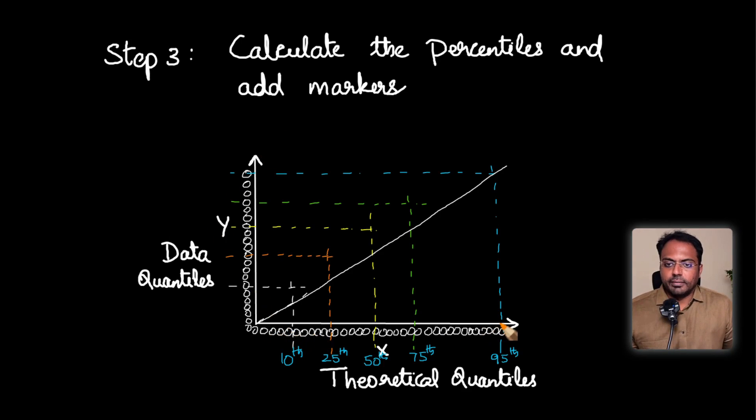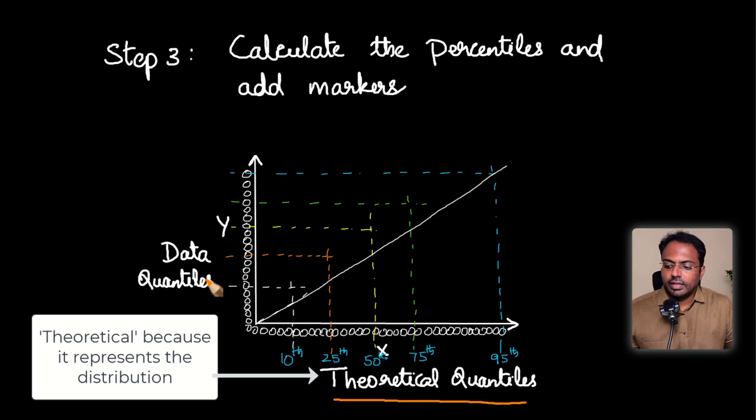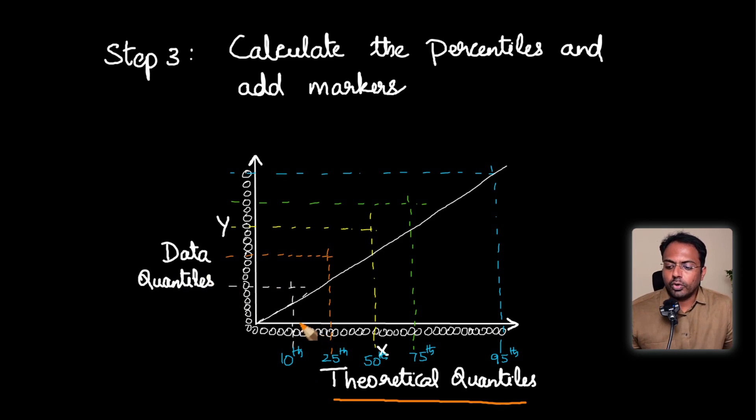Now we come to step three. We have arranged the data already. Now for both x and the y data, that is the distribution, we call it as the theoretical quantiles. And the y axis, we call it as the data quantiles. Now what happens here is, we are going to compute the first percentile to 100th percentile for both the x as well as the y. The x originally contained the distribution that we want to compare, which is the standard normal distribution. And y contains the actual data, which is the variable that we have.